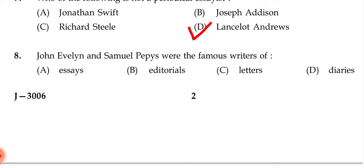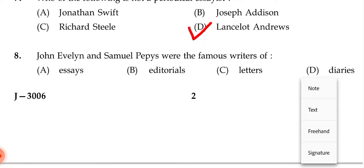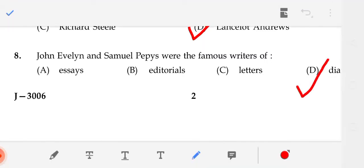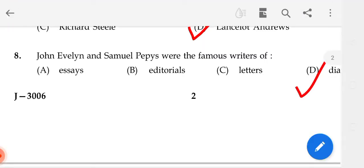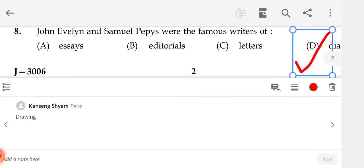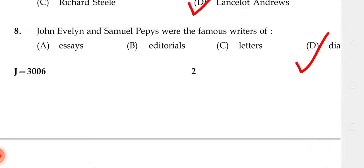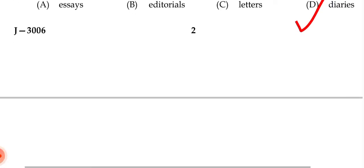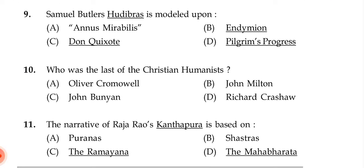Question 8: John Evelyn and Samuel Pepys were the famous writers of — the correct answer is diaries.